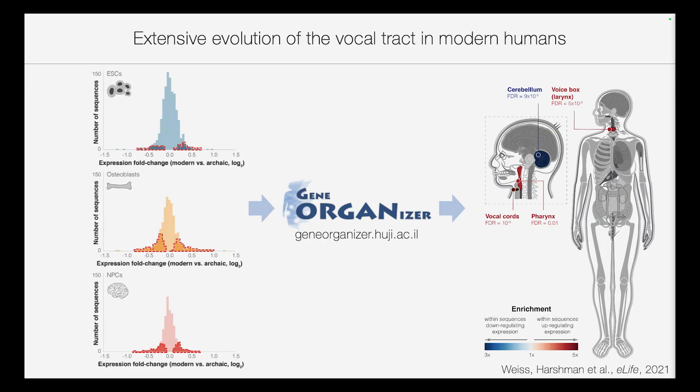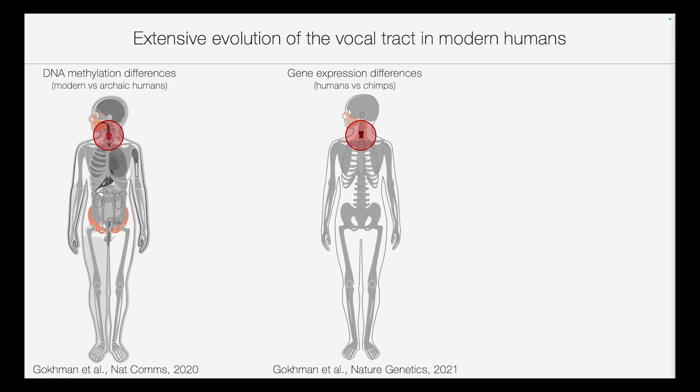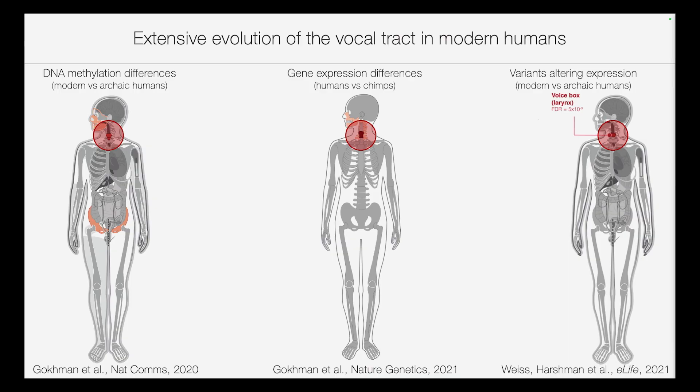That was interesting because morphologically, the cerebellum is known to be the most divergent brain region between archaic and modern humans. If we look at variants that up-regulate expression, the most enriched organs are related to the vocal tract — the voice box, the vocal cords, and the pharynx. This pattern of enrichment in the voice box wasn't the first time we saw it: we saw it when comparing DNA methylation between modern and archaic humans, again when comparing gene expression between humans and chimps, and we see it here again in variants that alter modern human expression.